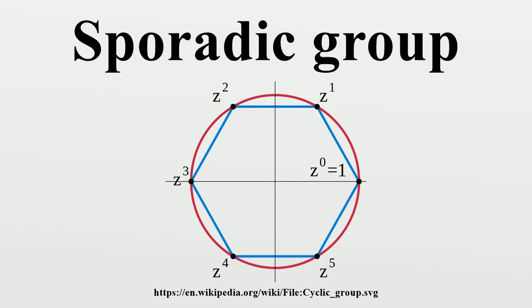They are also known as the sporadic simple groups, or the sporadic finite groups. The Tits group is sometimes regarded as a sporadic group, in which case the sporadic groups number 27. The monster group is the largest of the sporadic groups and contains all but six of the other sporadic groups as subgroups or subquotients.